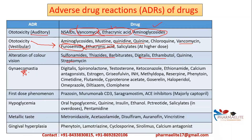For alteration of color vision, drugs include sulfonamides, streptomycin, barbiturates, digitalis, and quinine. Gynecomastia is caused by digitalis, diuretics like spironolactone, testosterone, ketoconazole, ethionamide, and phenytoin — remember phenytoin here. First-dose phenomenon, where blood pressure drops, is associated with prazosin, muromonab-CD3, sargramostim, and ACE inhibitors, majorly captopril.